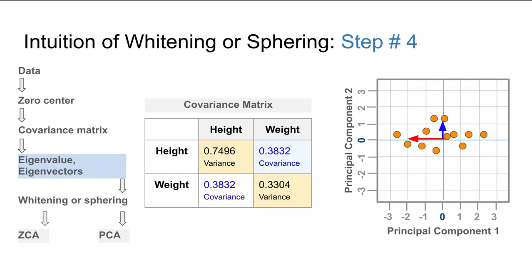Once the covariance matrix is calculated, the next step is to calculate the eigenvalues and eigenvectors. Here, Principal Component 1 is directed along the largest variation in the dataset, and Component 2 is orthogonal to Component 1, as shown by the blue arrow.